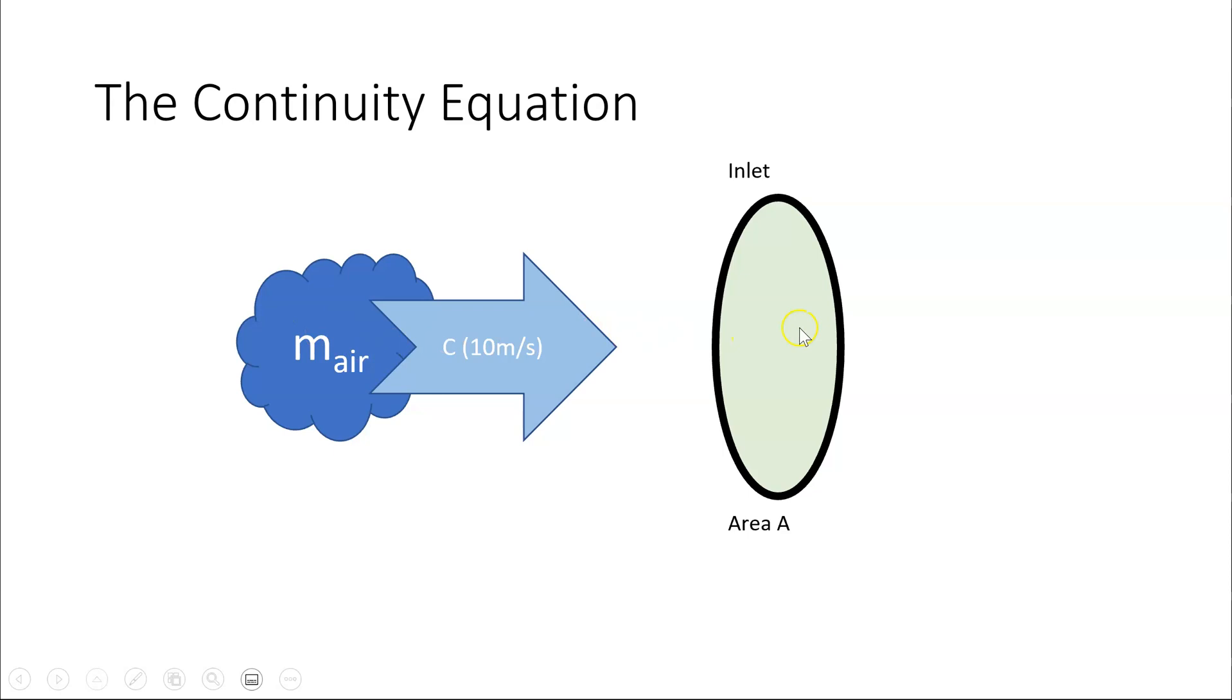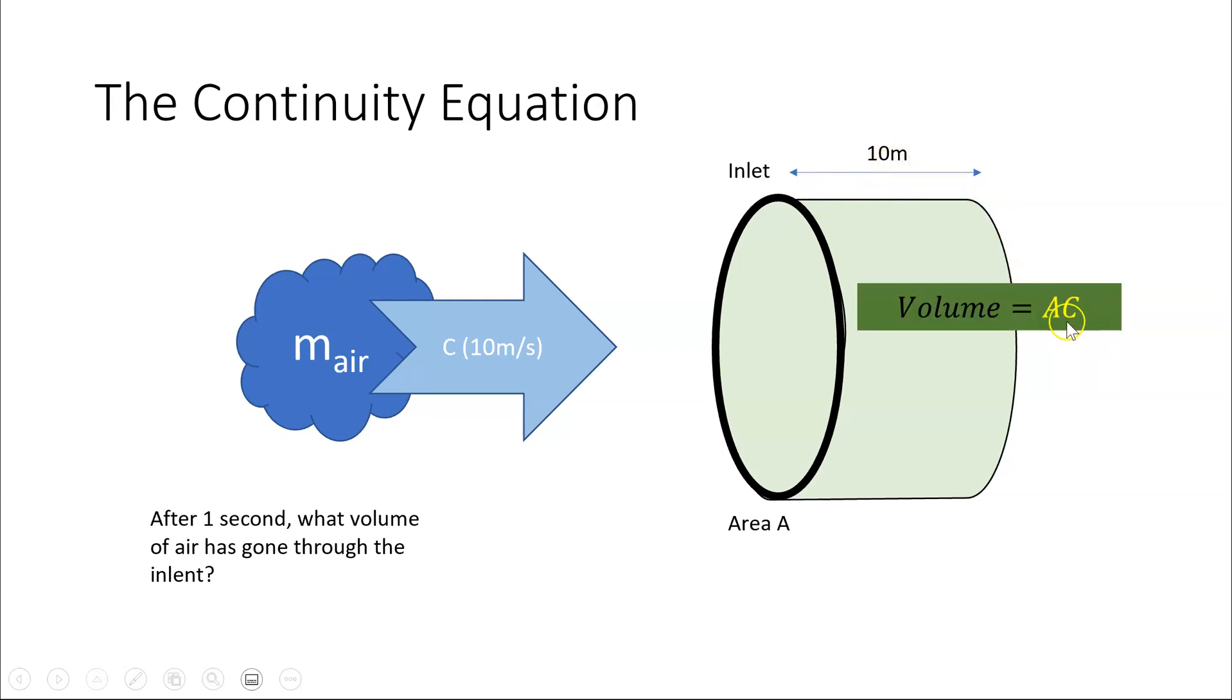The air comes into the engine and if it is going at 10 meters per second, then after one second, it should have extended out here by 10 meters. So after one second, what volume of air has gone through? Well, the volume would be the cross-sectional area times the velocity here, which is 10. So it's AC.